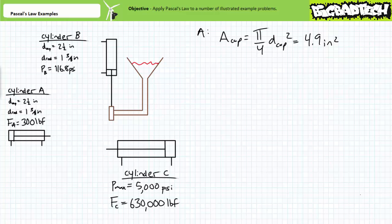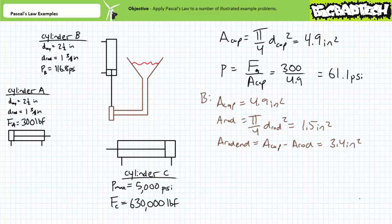The cap end functional area of cylinder A is approximately 4.9 square inches. Pascal's law suggests that extending with 300 pounds of force using the full cap end area of cylinder A necessitates a working pressure of approximately 61.1 psi. The functional area of cylinder B while retracting is the annular or ring-like rod end area which is the area of the cap end minus the area of the rod. The rod end of cylinder B has an area of approximately 3.4 square inches. Given pressure is observed to be 116.8 psi while retracting, Pascal's law suggests that cylinder B is retracting with a force of approximately 400 pounds.